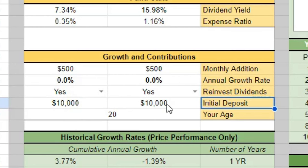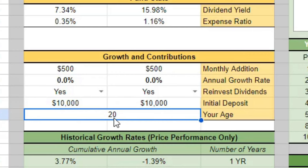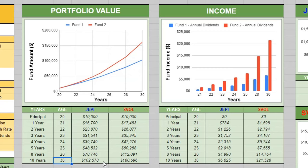If you reinvest the dividends starting with an initial $10,000 deposit at age 20, by age 30 you can see how much you'd have in JEPI versus SVOL in this low-risk environment. You can also see what income you'd be reinvesting into the stock, and if you're not in a tax-sheltered environment, what you'd owe in taxes versus your actual income increase.